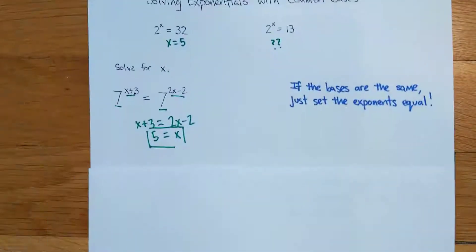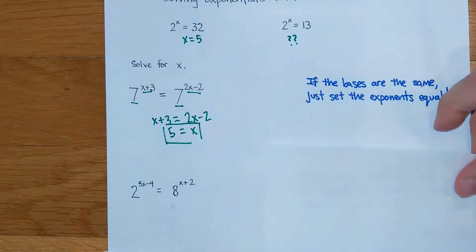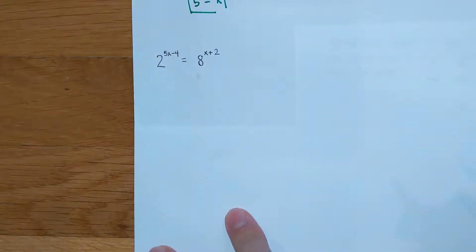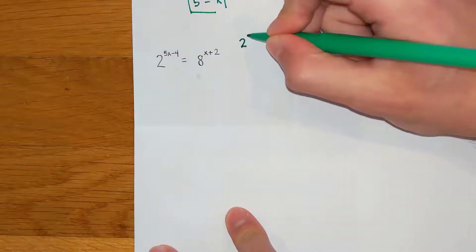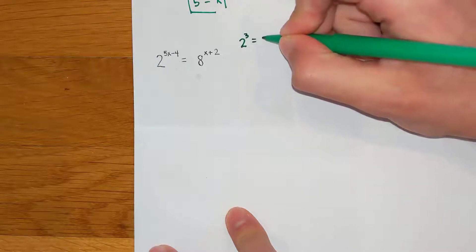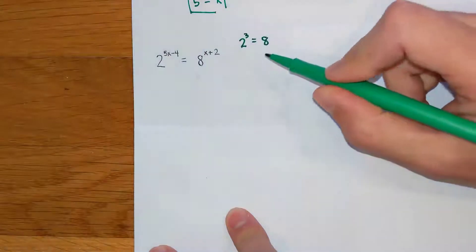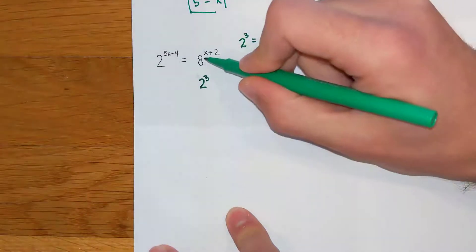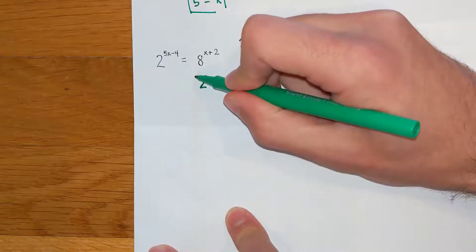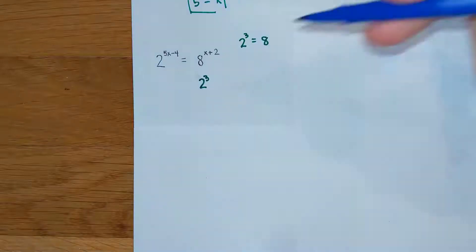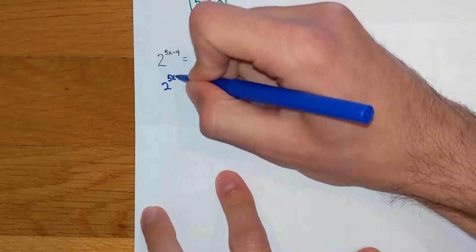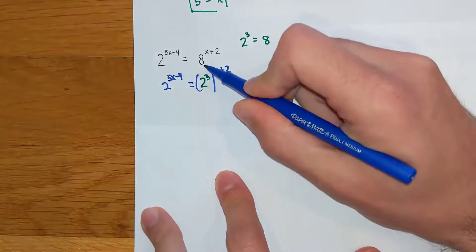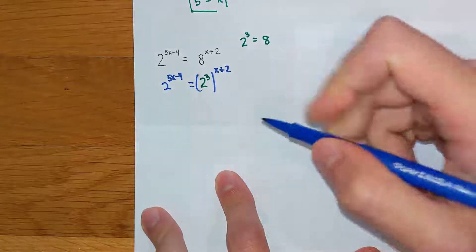Obviously, in most problems, you're not going to have it where it's already the exact same base. So it could be a setup like you see right here for our second problem. And on this problem, what we are actually going to do is use substitution. Turns out that 2 to the 3rd power equals 8. So what I'm going to do is I'm going to substitute 2 to the 3rd power where that 8 used to go. Everything else in my problem is going to stay the same. I still have 2 to the 5x minus 4. I still have that x plus 2 for my exponent out here. But the only thing I did is I substituted in 2 to the 3rd in place of the 8.